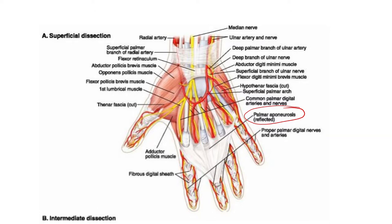This superficial palmar arch is seen resting on certain long tendons — that is the tendons of the flexor compartment — the long flexor tendons along with the lumbricals and also the nerves, that is the branches coming from the median nerve. All these things make up the bed of the superficial palmar arch.